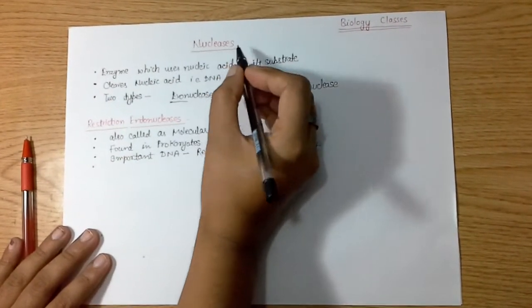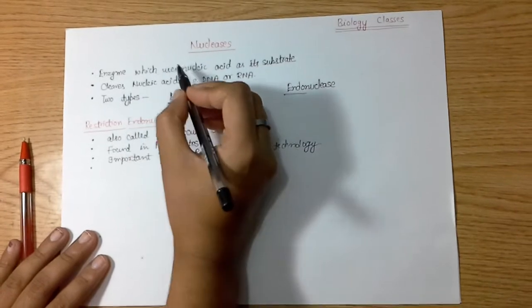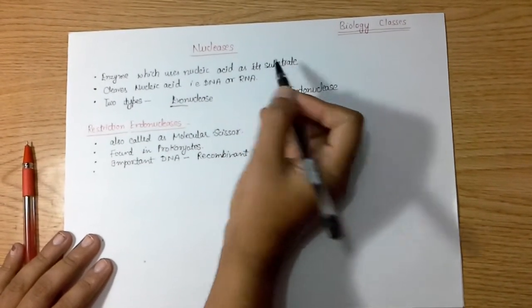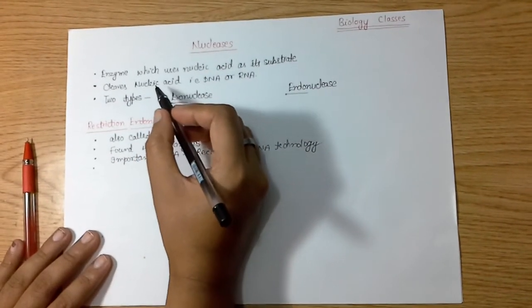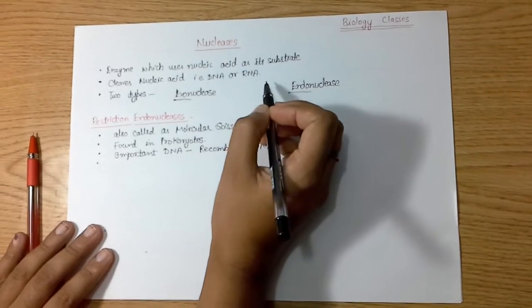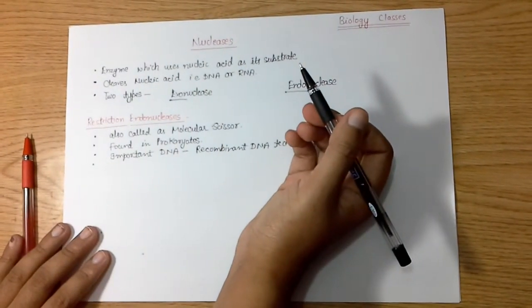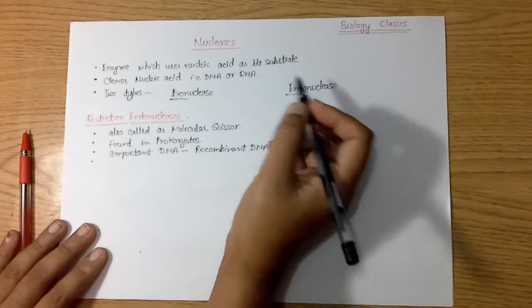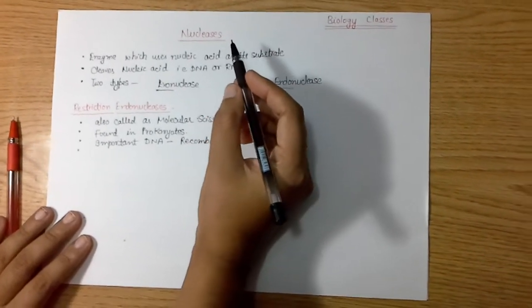Nucleases are of cleaving nature, so they cleave nucleic acid—that is, DNA or RNA. The nucleic acid may be DNA or RNA and may be in double-stranded or single-stranded form. It doesn't matter here, but nucleases are known for their cleaving nature of nucleic acids.